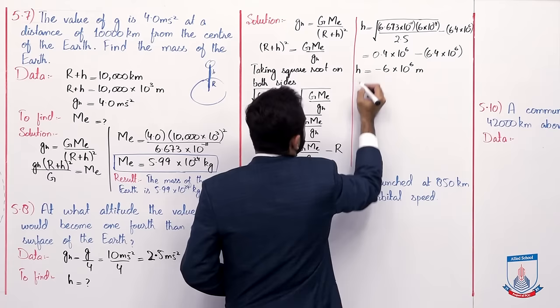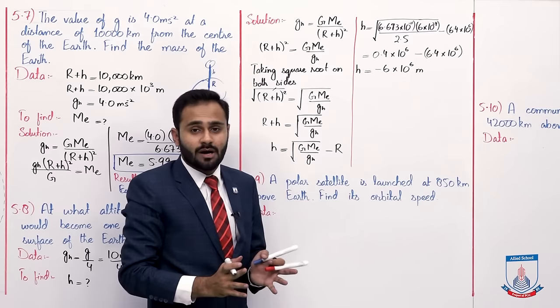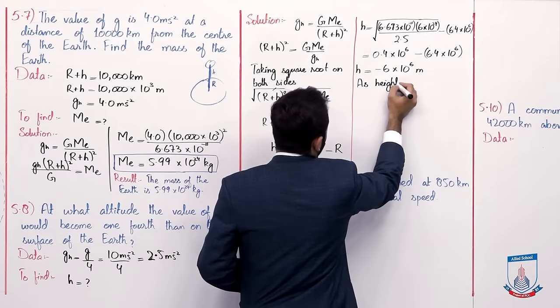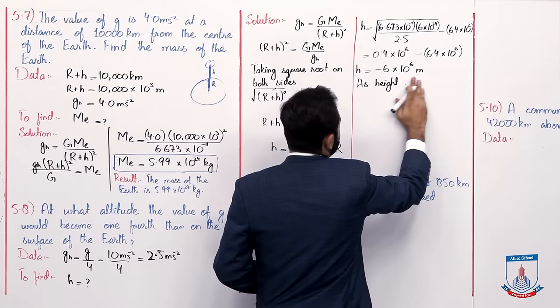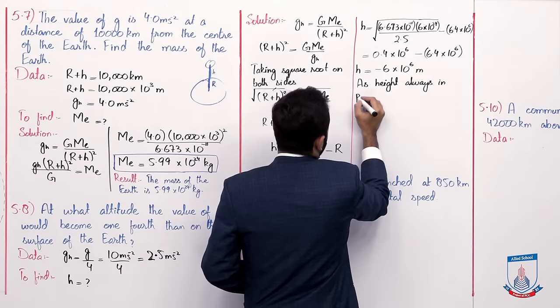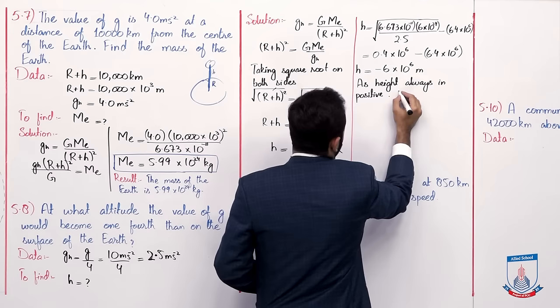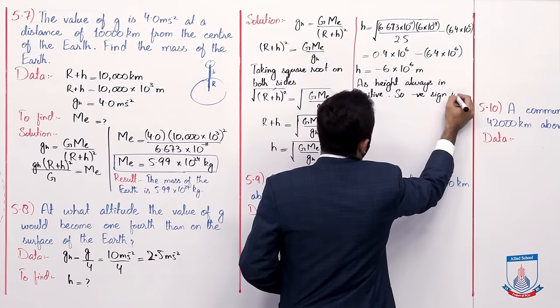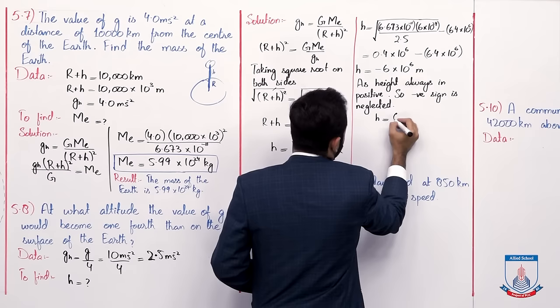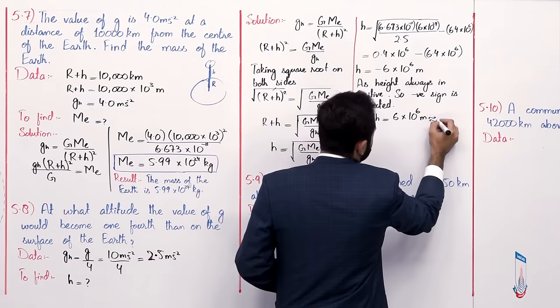This is the height we are finding, but as you know, height can never be negative — it is always positive. So the negative sign is neglected. h equals 6 multiplied by 10 to the power 6 meter, which is approximately equal to 1 Earth radius.